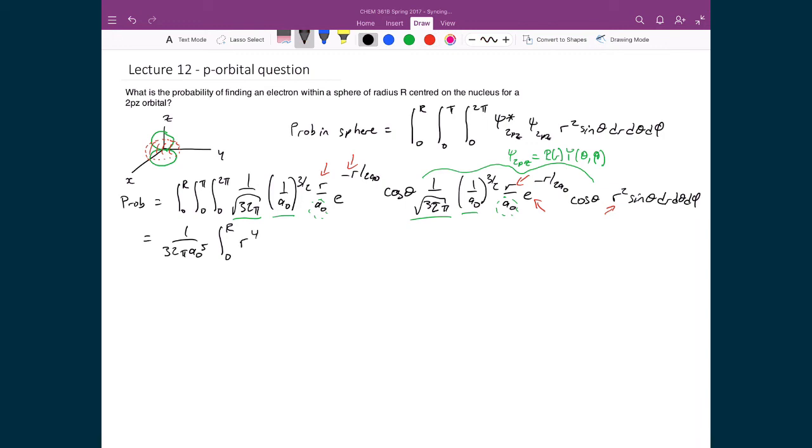These two exponential terms, when I multiply them together, I add up the terms in their exponents. I have -r/2a₀ plus -r/2a₀, so that's essentially 1/2 plus 1/2 equals 1, giving me e^(-r/a₀). And I'll carry through the dr.